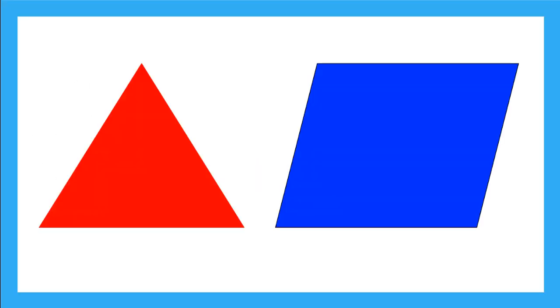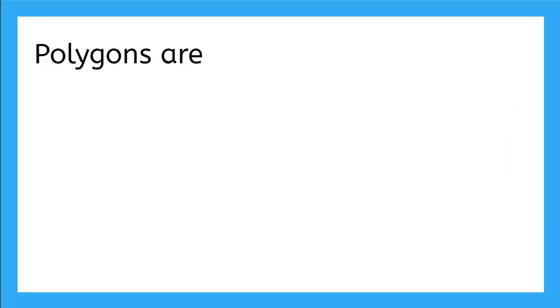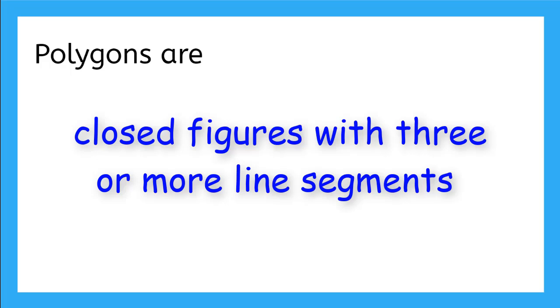In our previous lessons, we have learned about triangles and quadrilaterals. These shapes are polygons. But what makes them a polygon? Polygons are closed figures with three or more line segments.